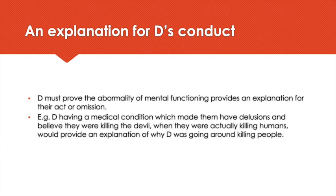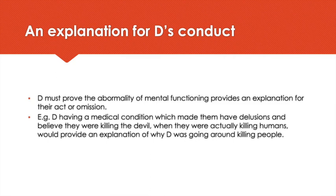The abnormality of mental functioning also has to provide an explanation for the act of killing. For example, if someone has a condition causing delusions about a lovely fluffy unicorn in their room and then goes around killing people, that doesn't really explain why they killed. However, if someone is having delusions that aliens are attacking them and as a result goes around killing people believing them to be aliens, then that would provide an explanation for the killings.